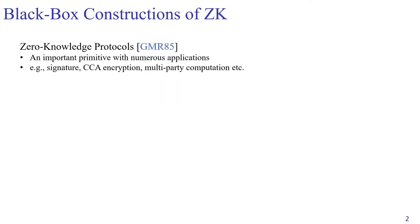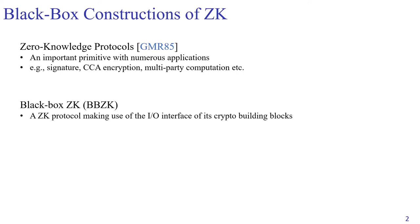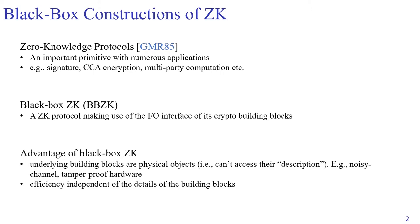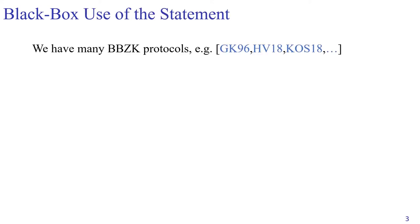Zero knowledge is an important primitive that requires no interaction. In this work, we focus on black box zero knowledge. By black box, we mean the construction of the zero knowledge protocol only makes use of the underlying primitive in a black box way. So why are we interested in black box zero knowledge? Because the efficiency of the zero knowledge protocol is not affected no matter how you implement the underlying building blocks. Over the years, our community has developed so many black box zero knowledge protocols.